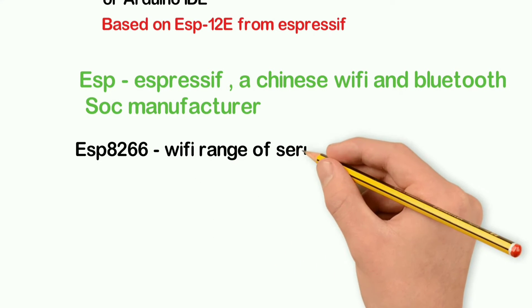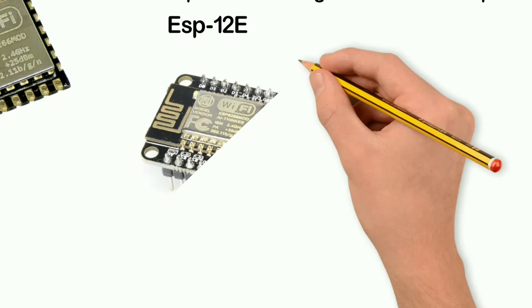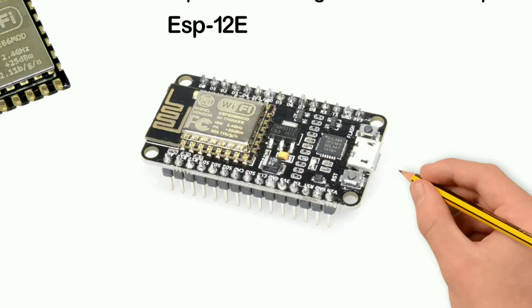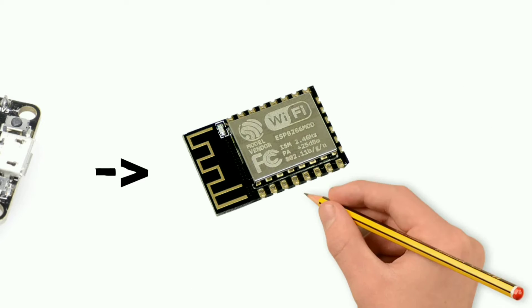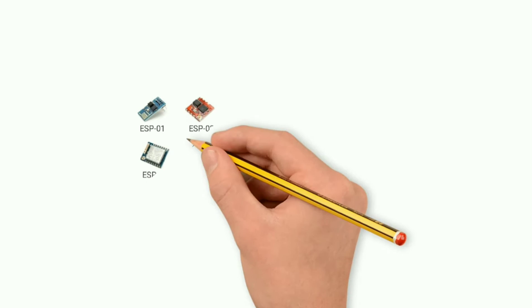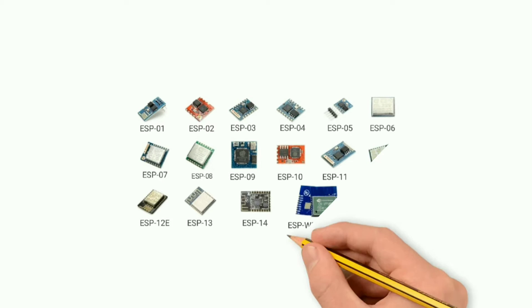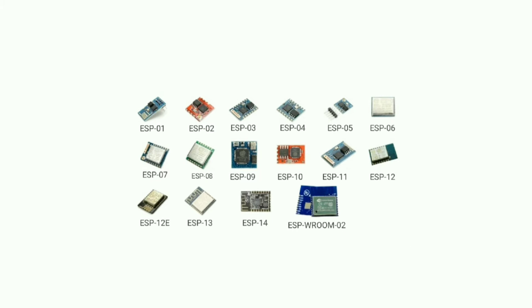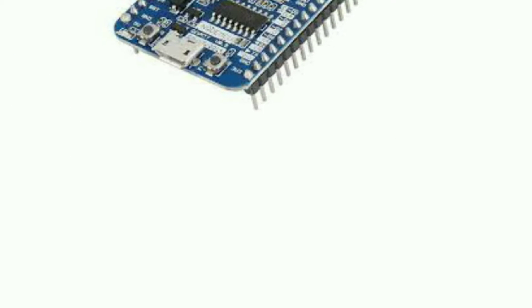Starting with the ESP8266, you can see there is a range of series boards. You can use the ESP8266-12E module. Looking at the WiFi features of the ESP8266-12E, it is a small board. There are versions including 10, 11, 12E, 13, 14, 15, and 16 in the ESP8266 series.